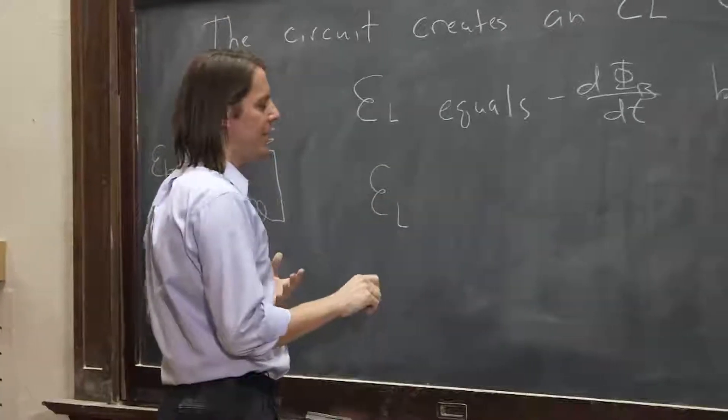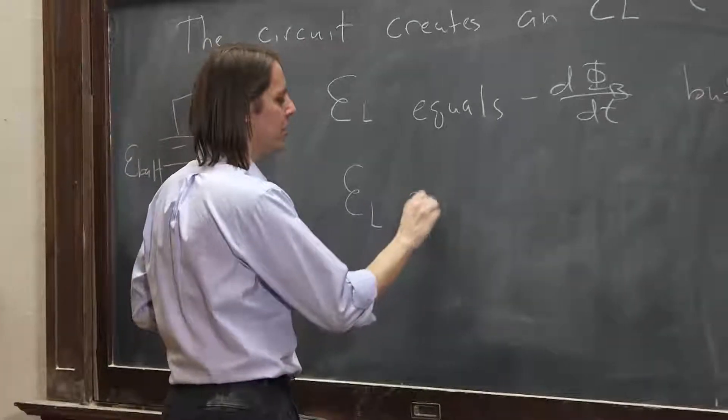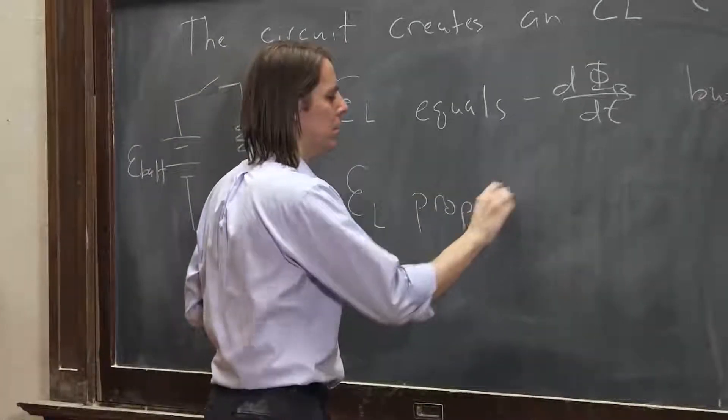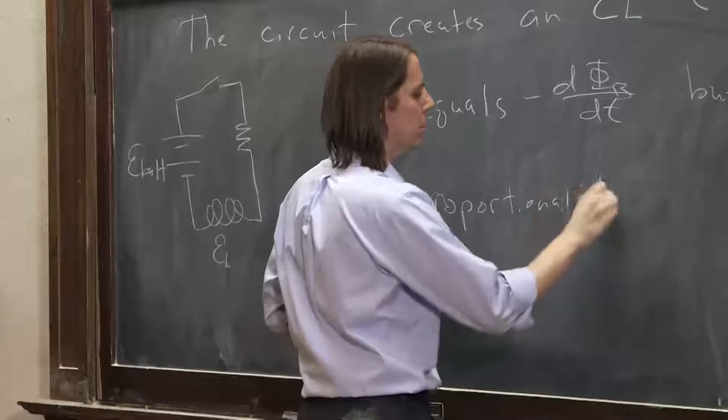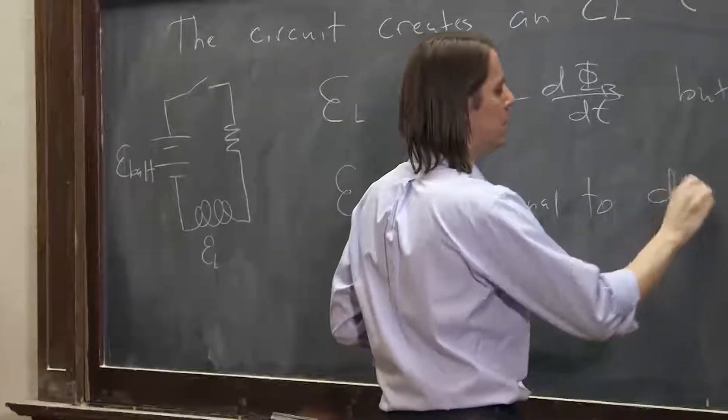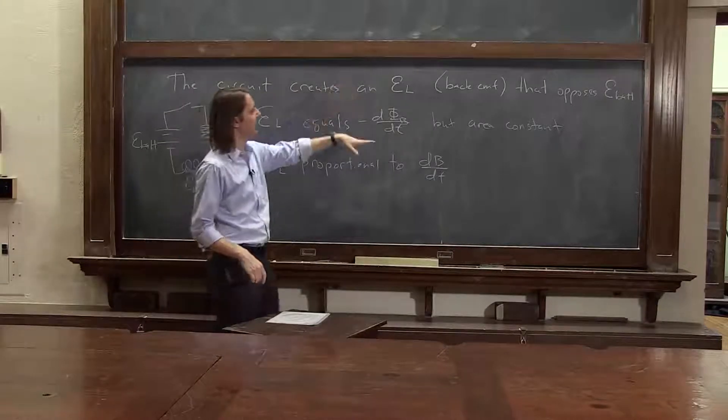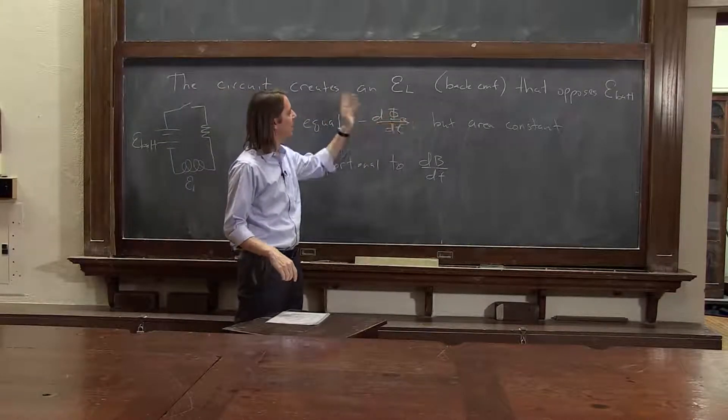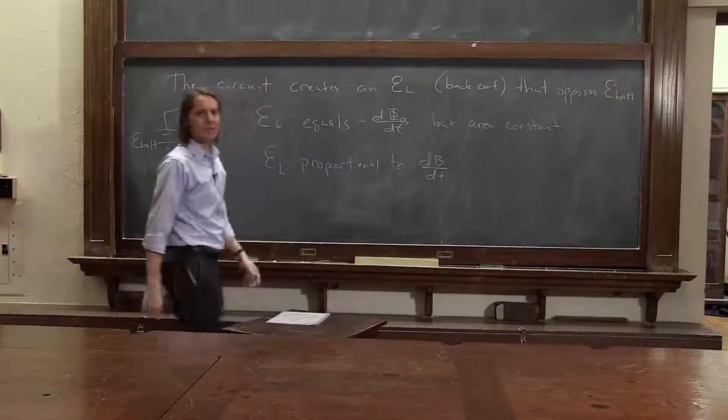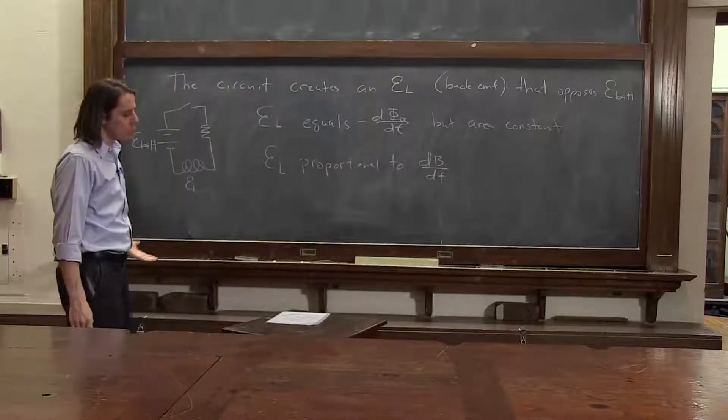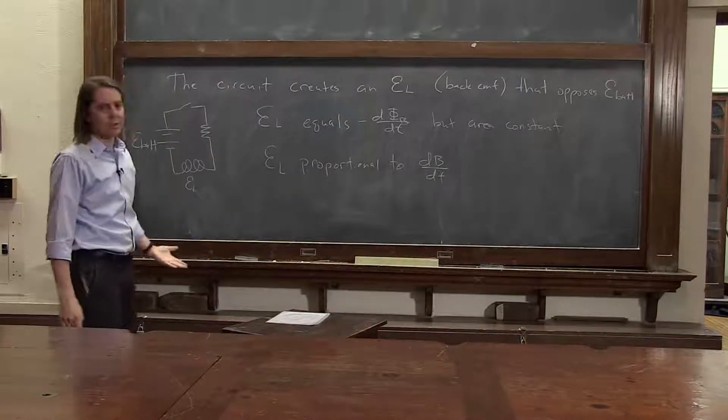So we could say, the EMF through the inductor is proportional to dB dt. So now we're just saying proportional. I can ditch the minus sign, and phi is B times A. A is constant, so it's really proportional to dB dt. So we could describe circuits that way.